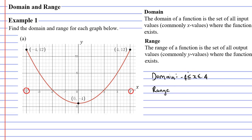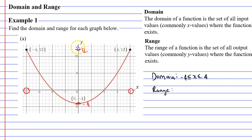Now let's find the range. We look at the vertical axis and see where the function exists. It exists from the lowest point all the way up to the highest point. When we go beyond 12 on the y-axis the graph doesn't exist, and when we go below negative 4 the graph doesn't exist either. So our range is the set of y values between negative 4 and 12.